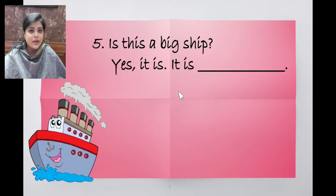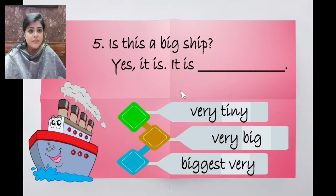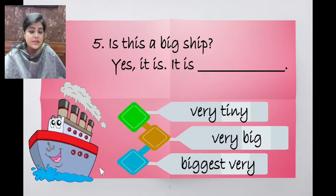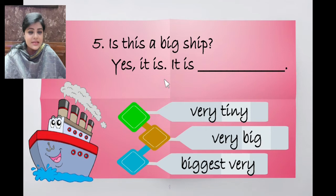Is this a big ship? Yes, it is. It is dash. Options: very tiny, very big, biggest very. Looking at the picture, the ship is big. You put very in front to emphasize it. The correct answer is the second option: it is very big.